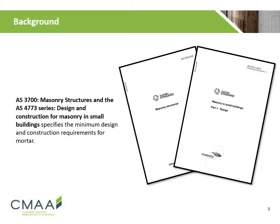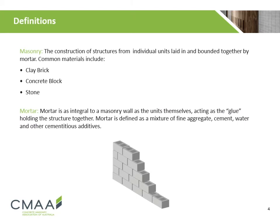AS3700 Masonry Structures and the AS4773 series Design and Construction for Masonry in Small Buildings specifies the minimum design and construction requirements for mortar. Masonry describes individual units bound together by mortar. Typical units include clay bricks, concrete blocks and stone. The mortar acts as the glue that holds the structure together.